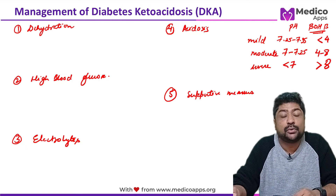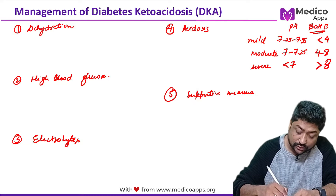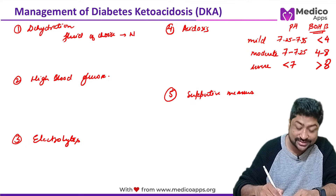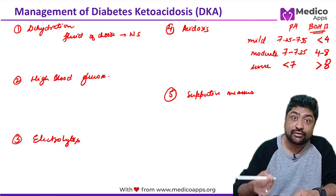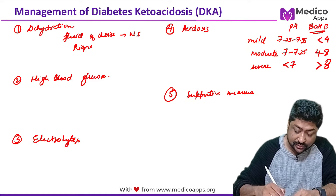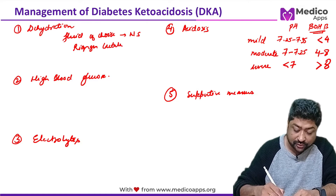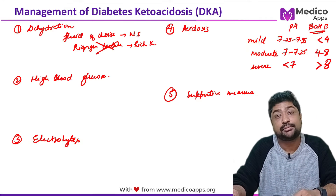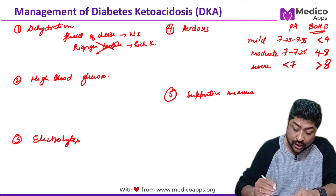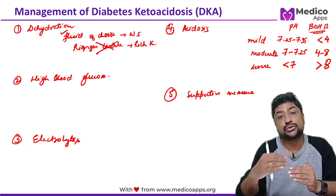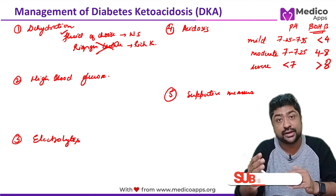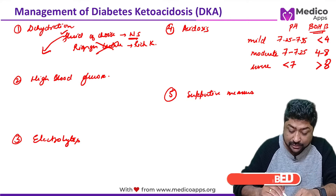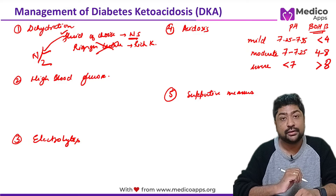The fluid of choice is normal saline — isotonic normal saline. Ringer's lactate should never be given because it is rich in potassium, and these patients already have very high potassium levels. As you correct dehydration, sodium levels will rise, so you may need to switch from normal saline to N/2 saline.